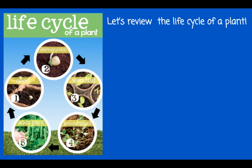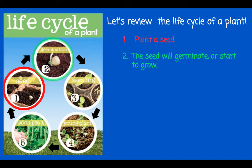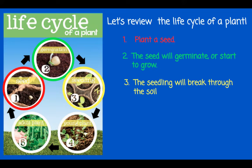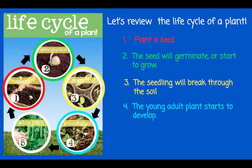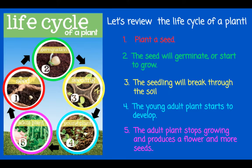Let's review the life cycle of a plant. First, the plant starts as a seed. The seed will germinate or start to grow. The seedling will break through the soil. The young adult plant starts to develop. The adult plant stops growing and produces a flower and more seeds. Now, let's watch the life cycle of a seed and plant in this time-lapse video. A time-lapse video is when they speed up the process. That means we'll see the entire life cycle of a plant in just a few short minutes.